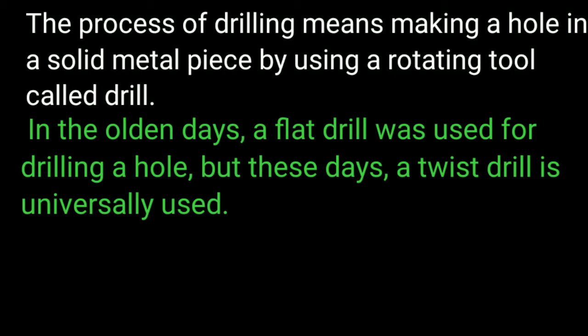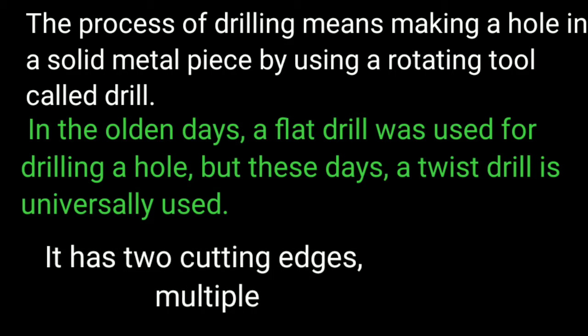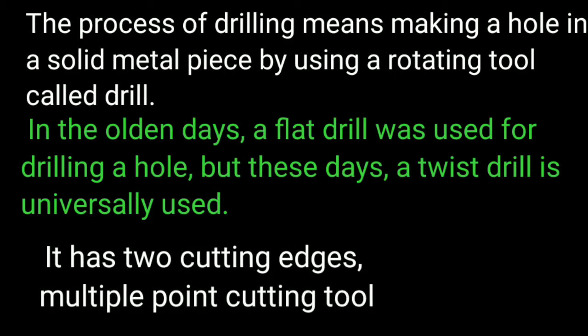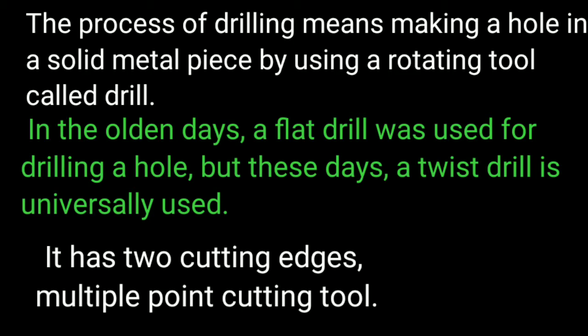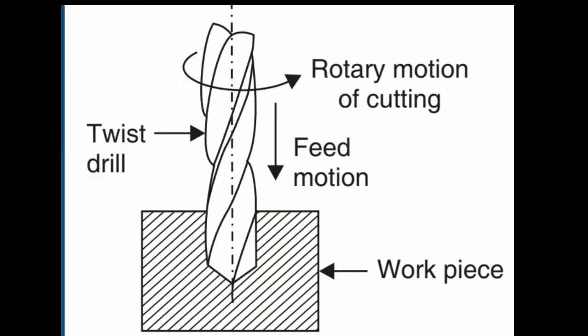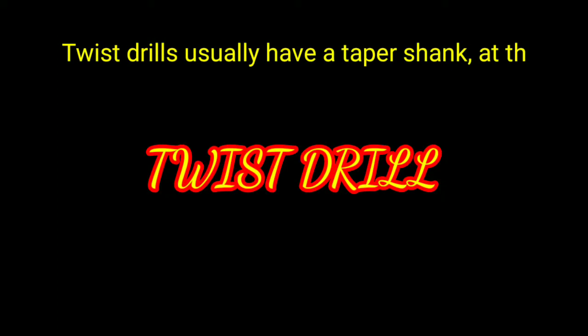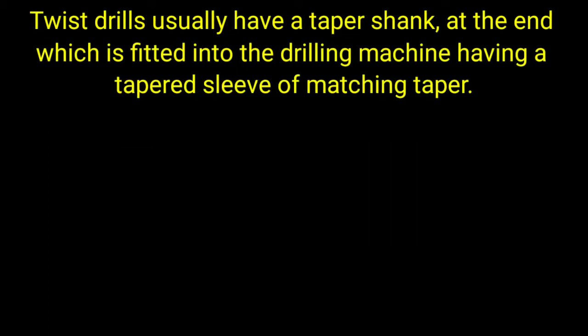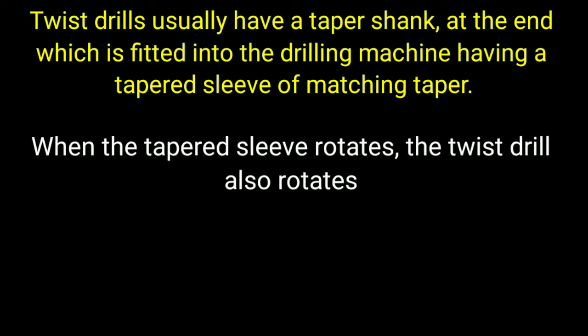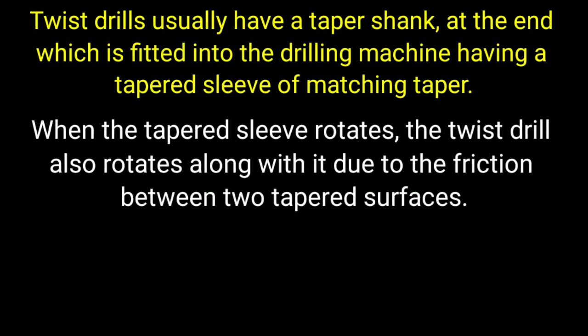A twist drill is the cutting tool used in conjunction with a drilling machine. It has two cutting edges, hence it is a multiple point cutting tool. The drilling operation is shown in figure. A twist drill usually has a taper shank at the end which is fitted into the drilling machine, which has a tapered sleeve of matching taper.